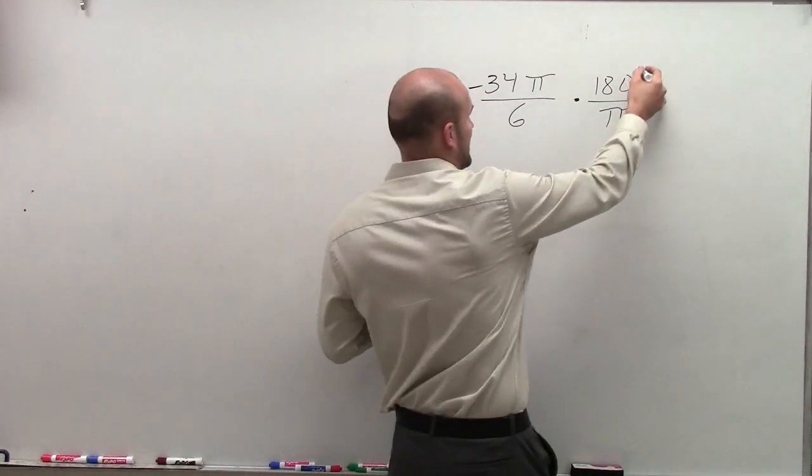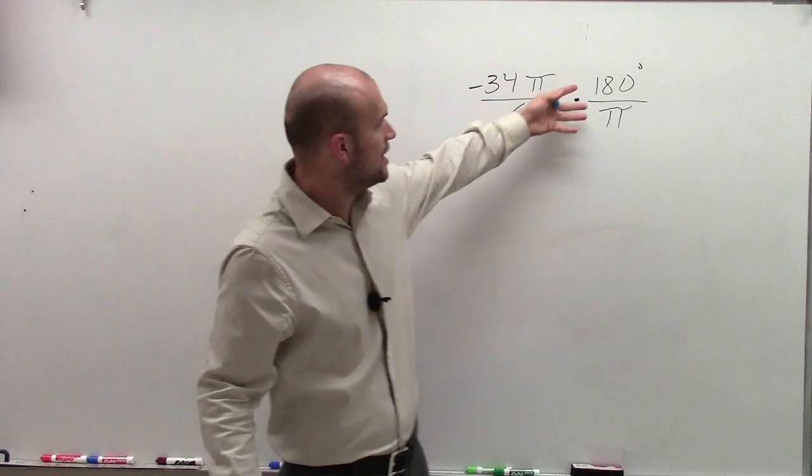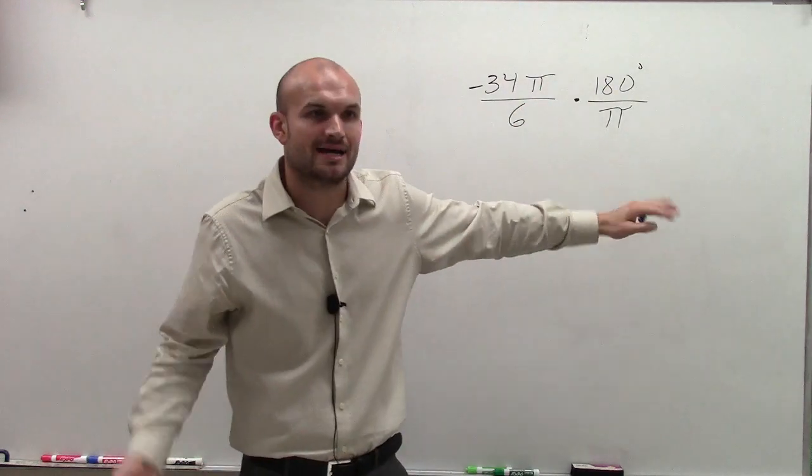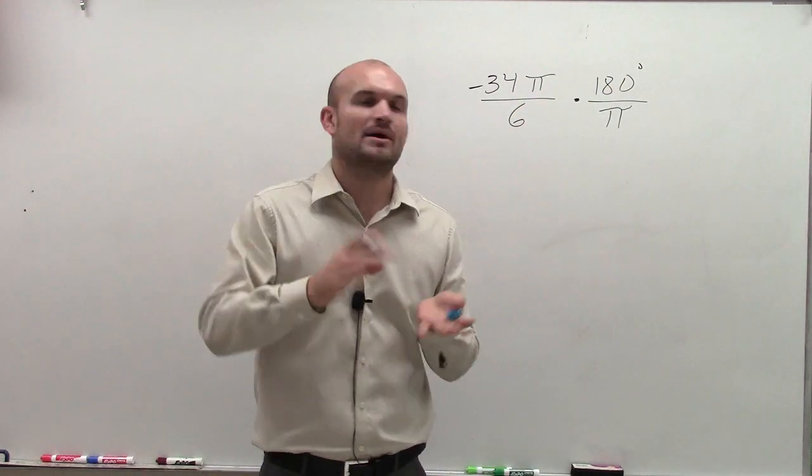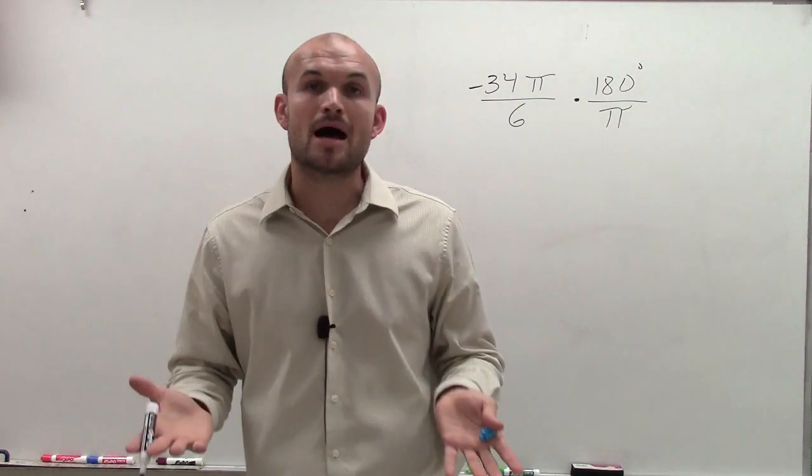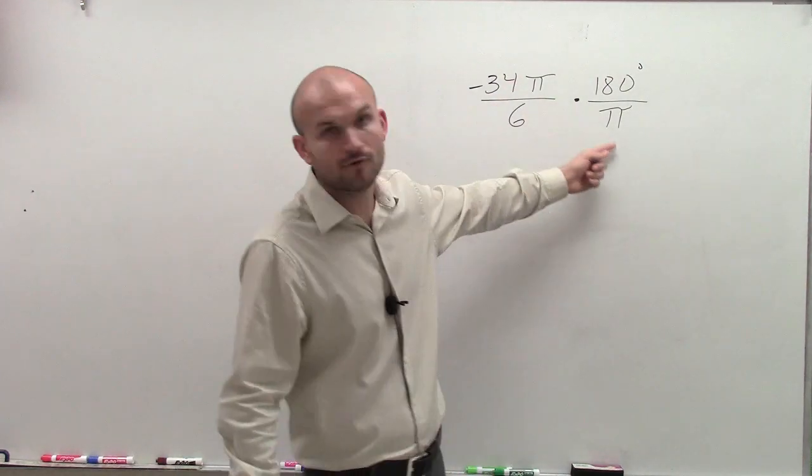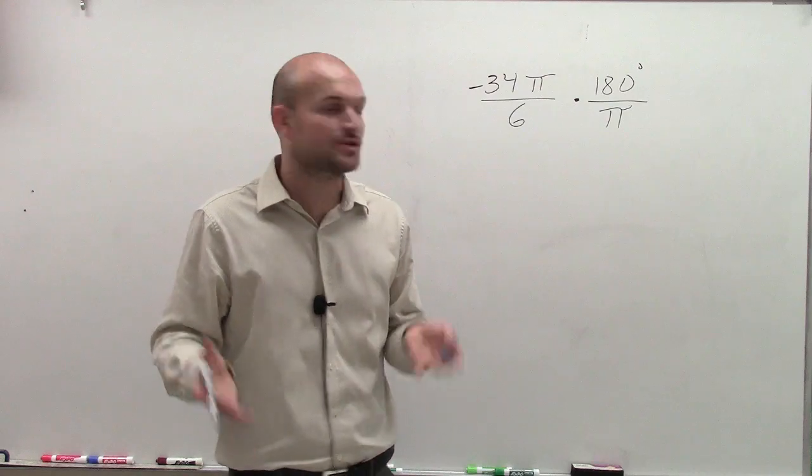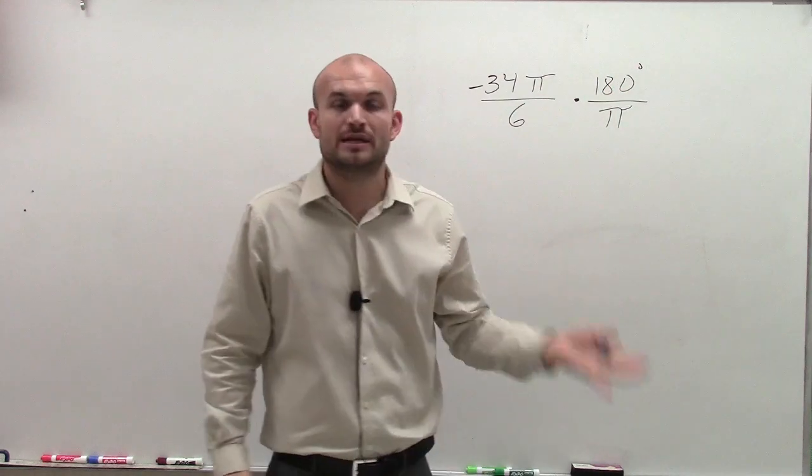When multiplying by 180 divided by π, the reason why I'm multiplying by this is because 180 degrees is equivalent to π. So it's OK if we multiply by it. We're not going to change the value of our problem, but we're going to change the units as π over π is going to cancel out our radian term, and we'll just be left with a unit of degrees.